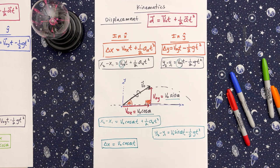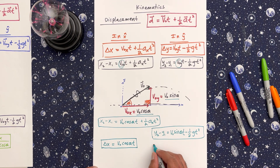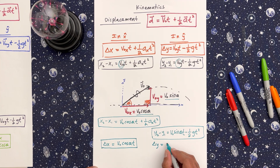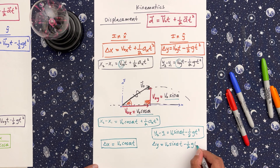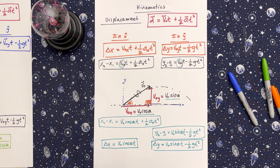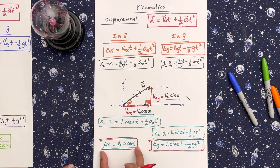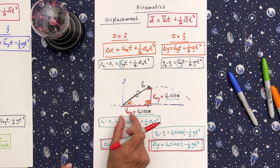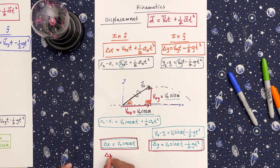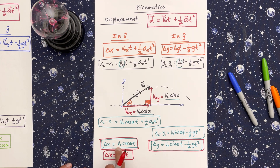For the y-direction, we keep the full equation: change in y equals velocity initial times sine theta times time, minus one-half g t squared. These two equations are the ones you'll mostly use. You might also see velocity initial cosine written as 'velocity initial x' and velocity initial sine written as 'velocity initial y.' Recognizing the difference between velocity initial (the magnitude) and velocity initial in x or y (a component) is crucial — that's a big source of confusion among students.